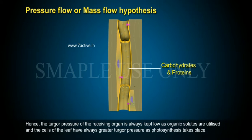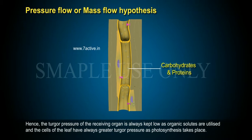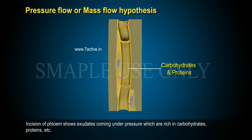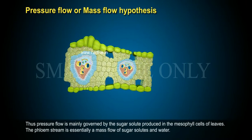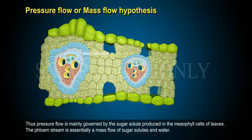Hence, the turgor pressure of the receiving organ is always kept low as organic solutes are utilized, and the cells of the leaf have always greater turgor pressure as photosynthesis takes place. Incision of phloem shows exudates coming under pressure, which are rich in carbohydrates, proteins, etc. Thus, pressure flow is mainly governed by the sugar solute produced in the mesophyll cells of leaves. The phloem stream is essentially a mass flow of sugar solutes and water.